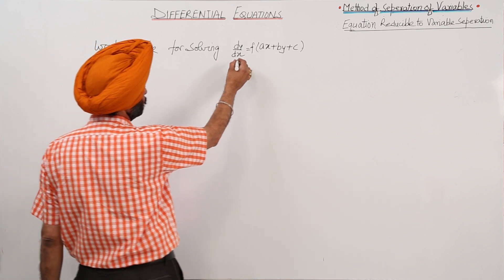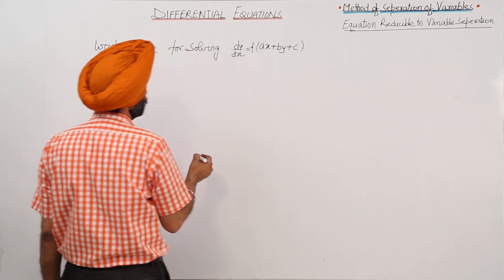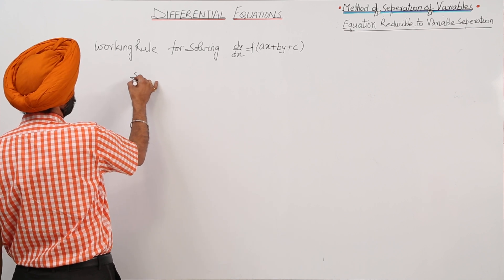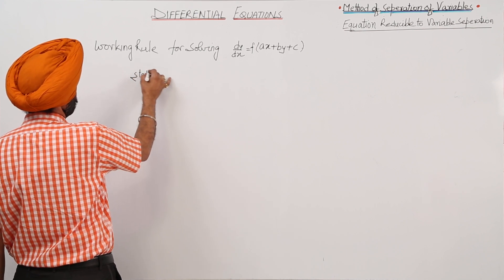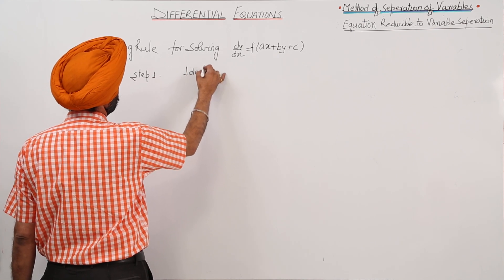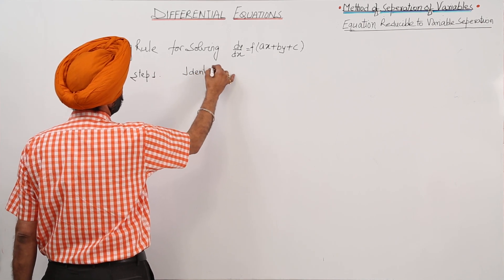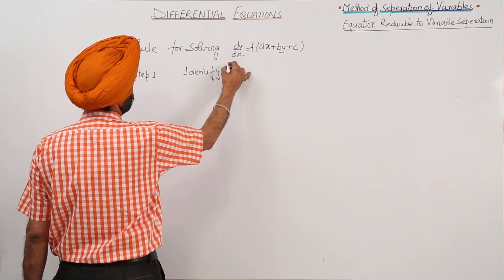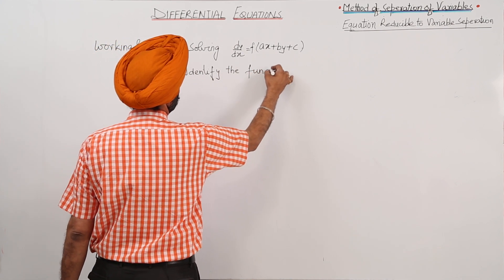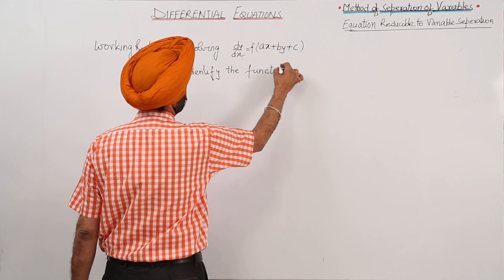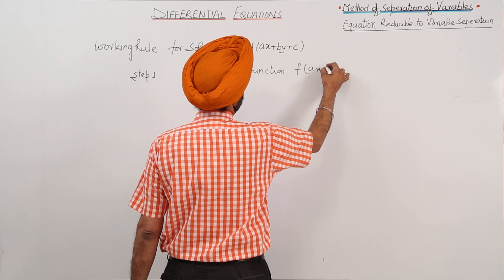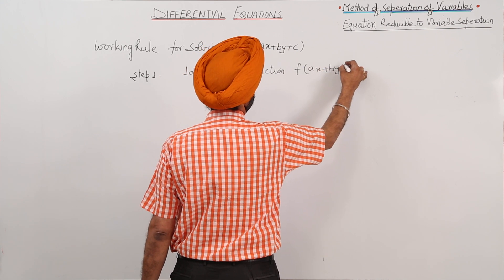Working rule for solving dy by dx is equal to f(ax plus by plus c). Step 1: Identify the function ax plus by plus c.